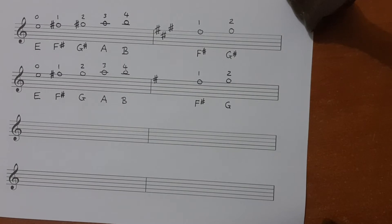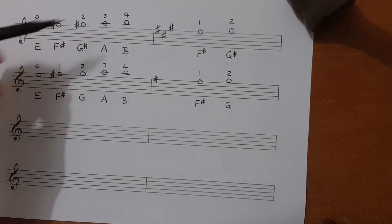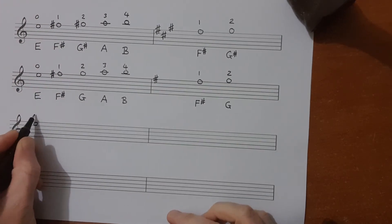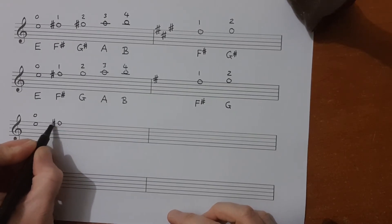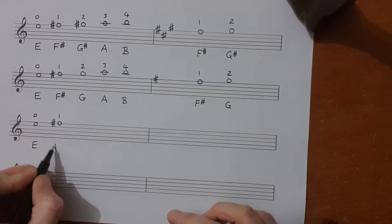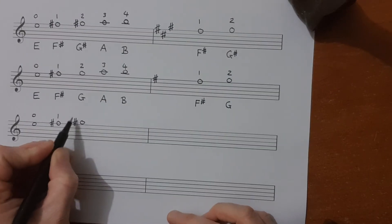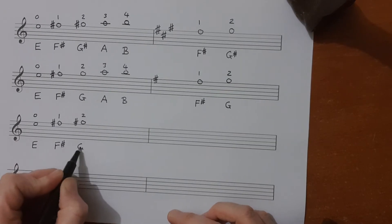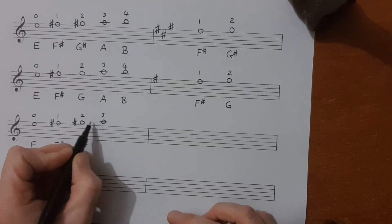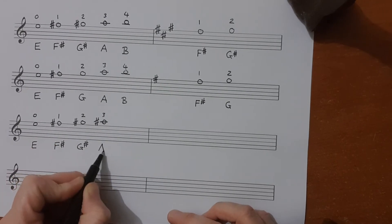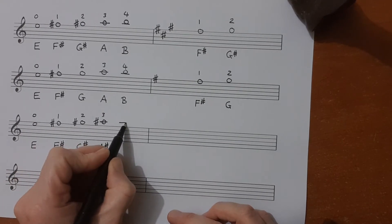Writing out the notes of the third finger frame, we go back to our first finger frame pattern and we're going to raise that third finger to an A sharp. E remains the same, F sharp remains the same, we have G sharp again and now we're adding A sharp and that is placed right next to the fourth finger B so the third finger stretches up towards the fourth finger.